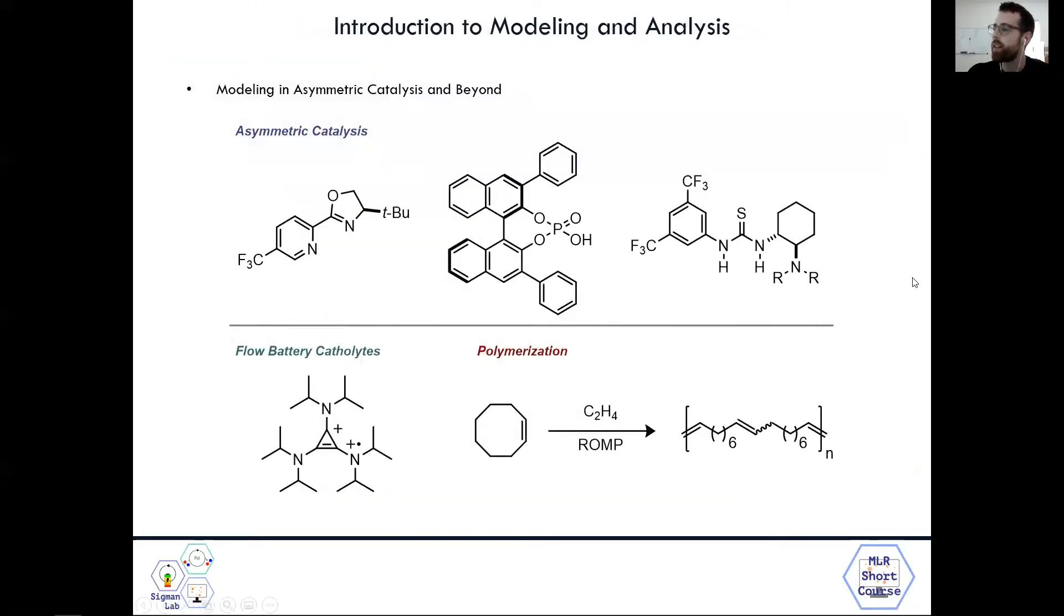So looking back, we've been largely in the asymmetric catalysis space, using delta-delta-g double dagger as our output, and largely looking at enantioselectivity, whether it be in transition metal catalysis or organic catalysis. We've been successful in featurizing these different ligands and catalysts.